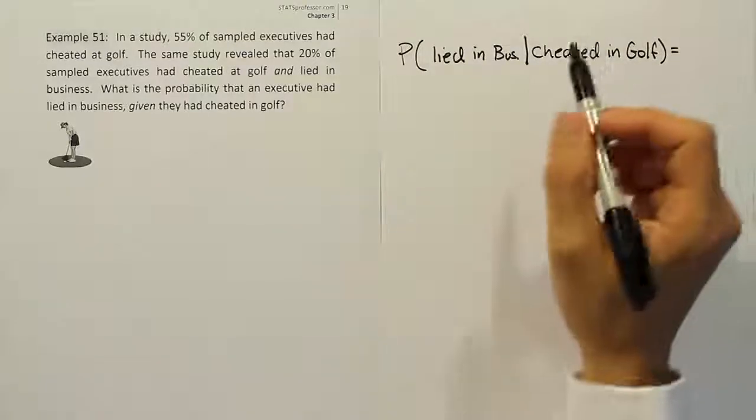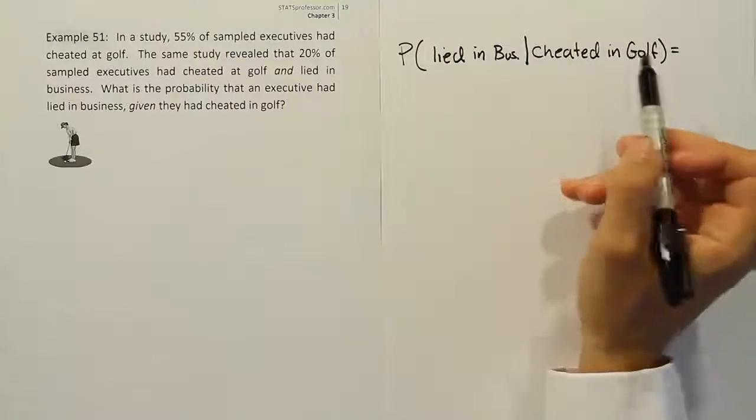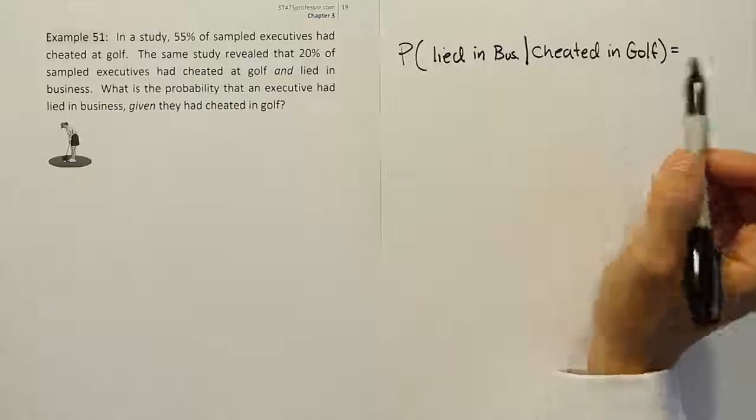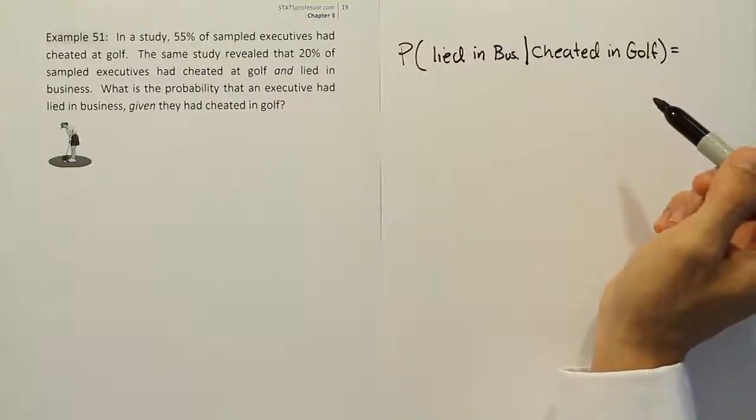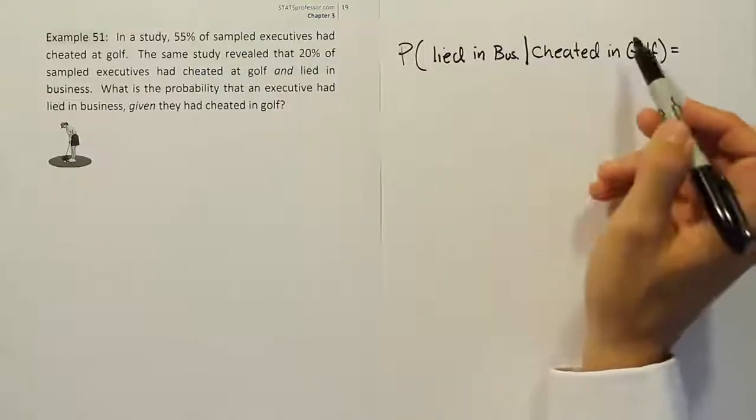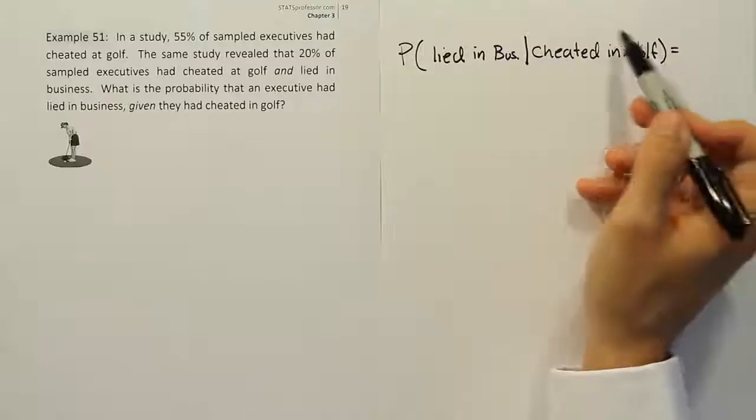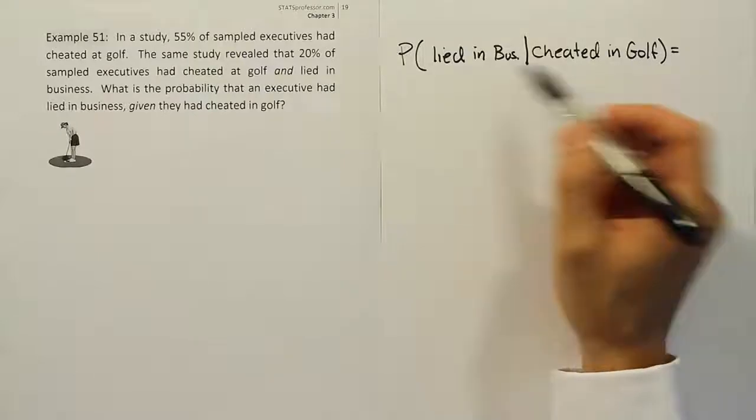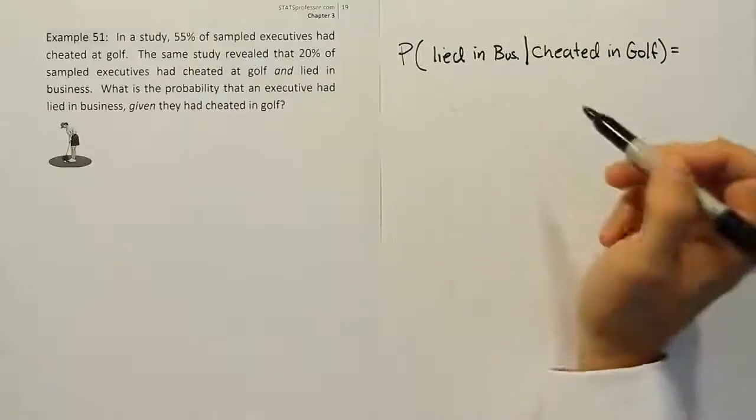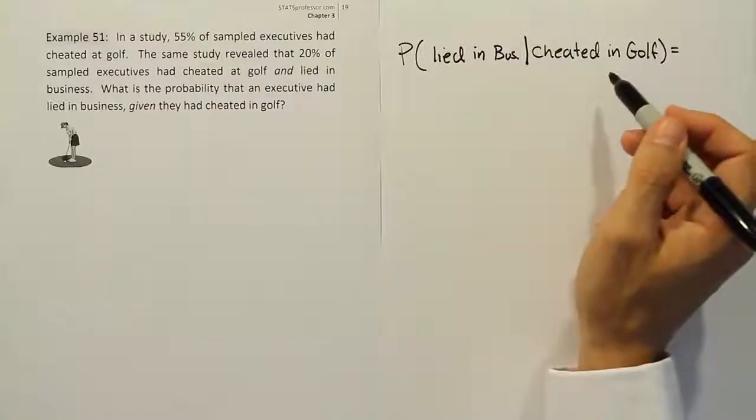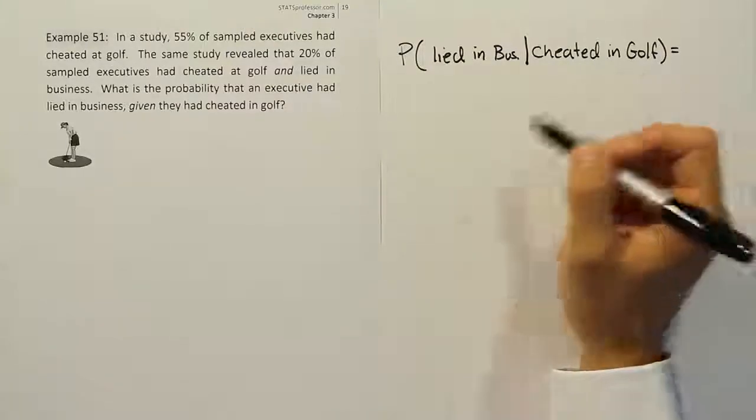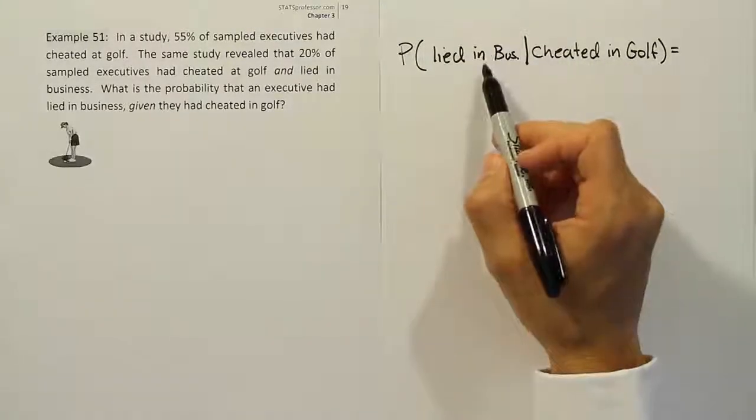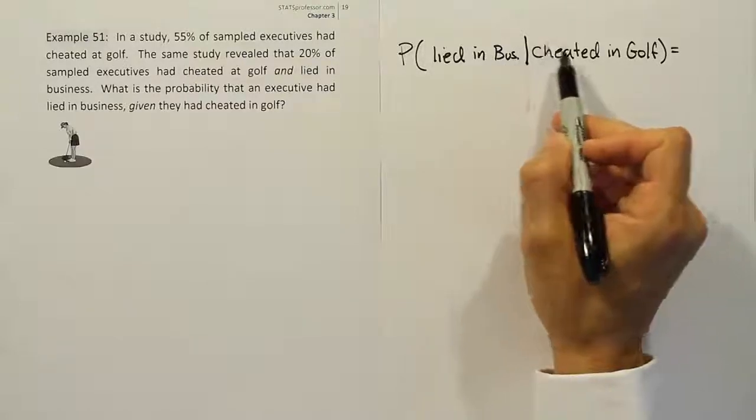Okay, so normally if we're doing the shortcut formula, we would just focus all our attention on the last category and we'd go to the column or row in the table that had that condition, and we'd find the number of people who lied in business in that column or row. But we don't have a table here, so we have to follow the definition of conditional probability.